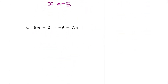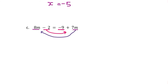Next is example C, where we have a situation with two different like terms — one involving m on each side of the equal sign, and a constant on both sides too. What you have to do here is move the like terms to one side of the equation and the constants to the other side, separating like terms from one side to the other.